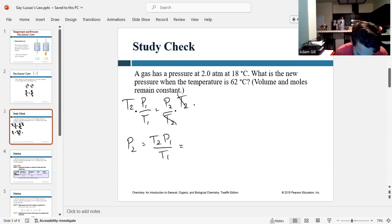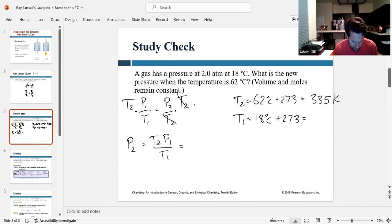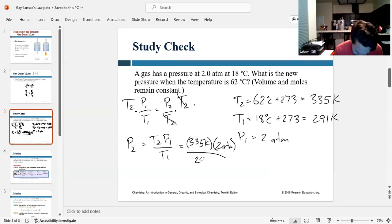And our final temperature was 62 Celsius, but we need to convert that to Kelvin. So plus 273, 273 plus 62 is 335 Kelvin. Temperature one was 18 degrees Celsius. We've got to convert that to Kelvin. So 18 plus 273 is going to be 291. And the initial pressure was two atmospheres. So let's plug those values in here. So temperature two is 335 Kelvin. Pressure one was two atmospheres. And temperature one was 291 Kelvin.